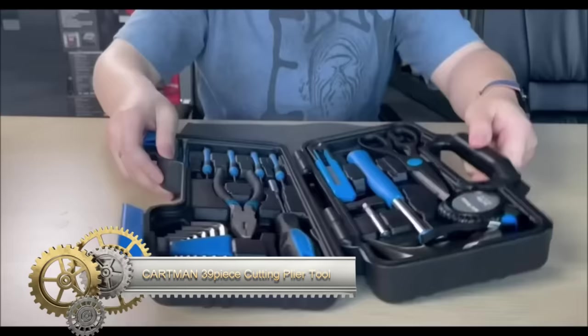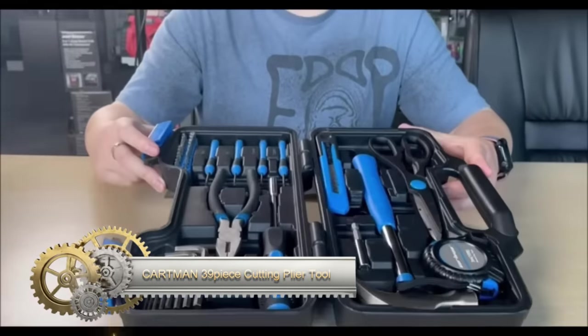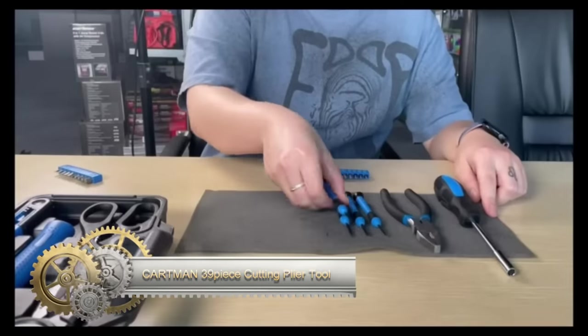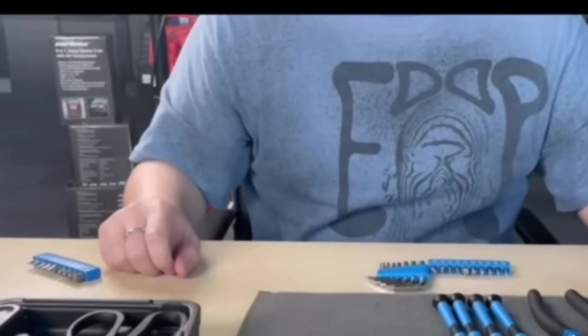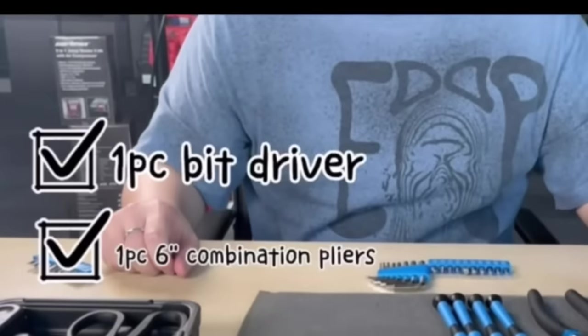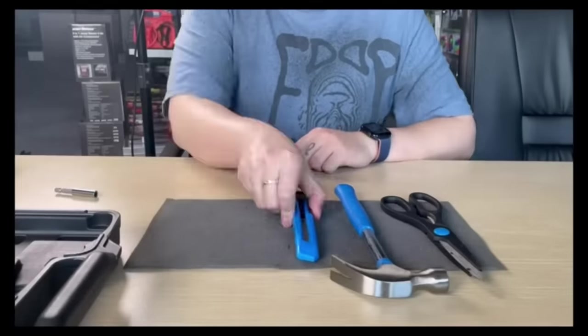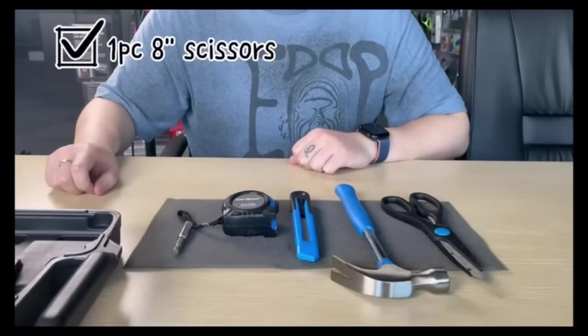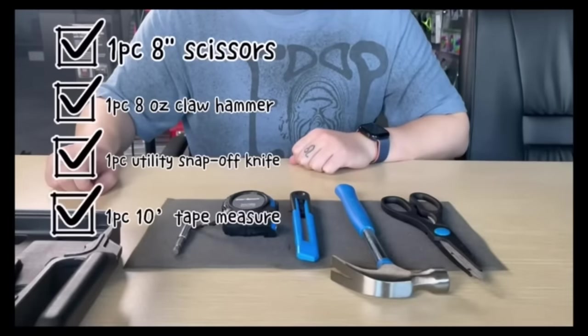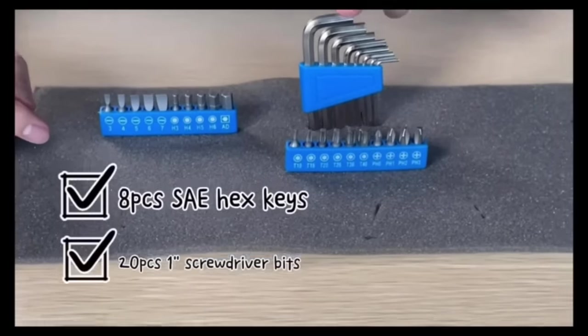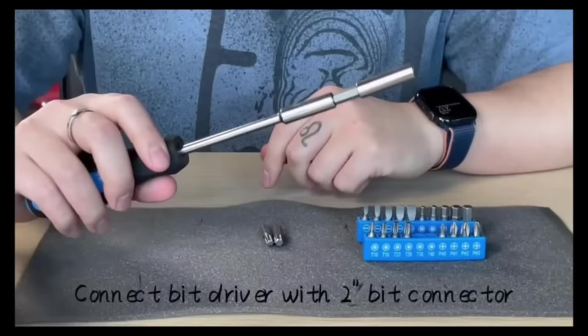The Cartman 39-piece cutting plier toolset is a comprehensive and versatile kit, offering essential tools for various household repairs and DIY projects. It encompasses a range of cutting tools, including wire cutters, pliers, and snips, as well as other useful tools like a hammer, screwdrivers, tape measure, and a level.